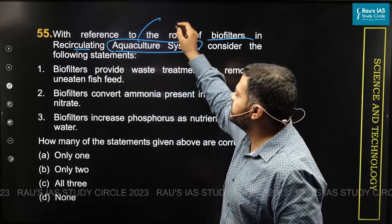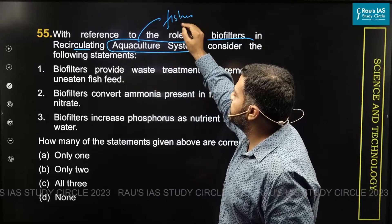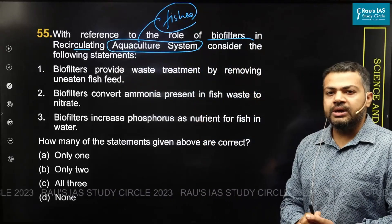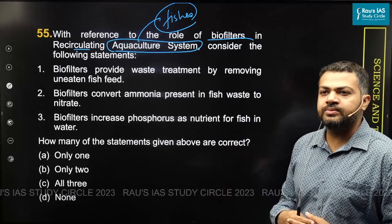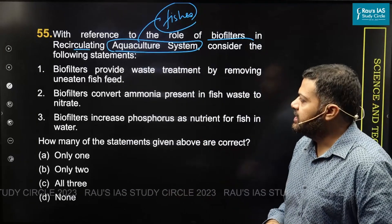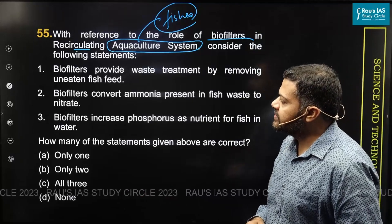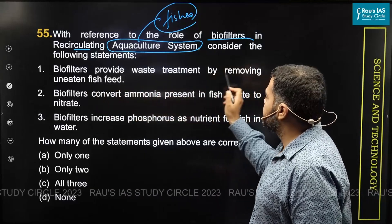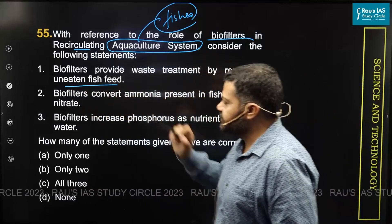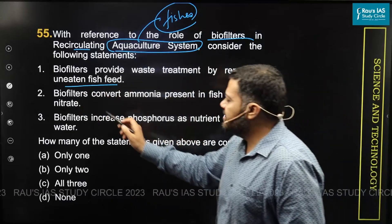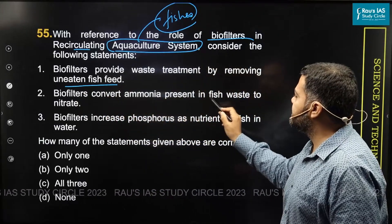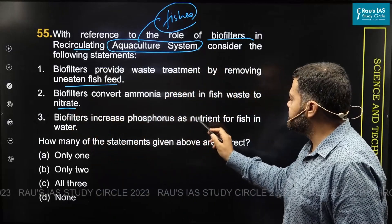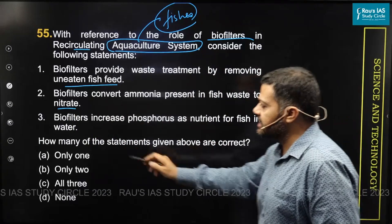Aquaculture is mostly used for fish breeding, where fishes are bred and kept. It is catching up a lot across urban centers of the country. The three statements are: biofilters provide waste treatment by removing the uneaten fish feed; biofilters convert ammonia present in the fish waste to nitrates; and biofilters increase the phosphorus as a nutrient for fish in the water.